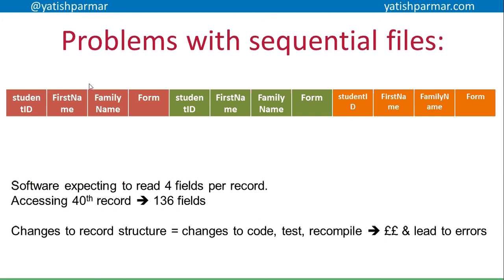Changes to the record structure basically mean changes to the code. If I want to add an extra field — say five fields per student instead of four — I've got to change the code, test it, recompile it, and every time I make changes I go through that process. It costs money and could lead to further errors in the code.